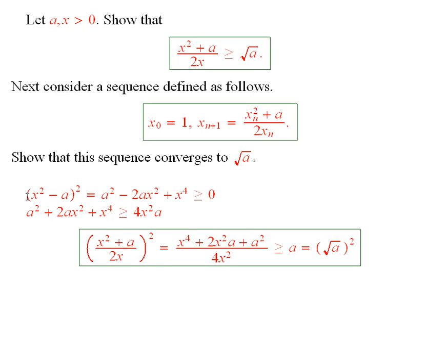So if I have x squared minus a squared, that is equal to this, and it has to be bigger than or equal to zero because anything squared is bigger than or equal to zero. So I will add 4x squared a to both sides here, and then I will divide both sides by 4x squared.